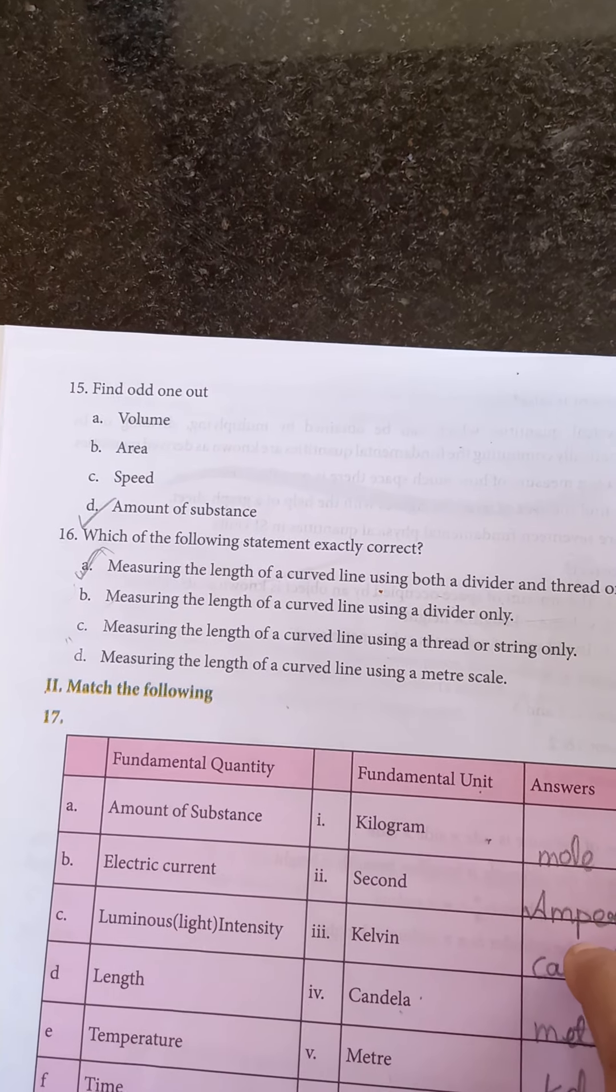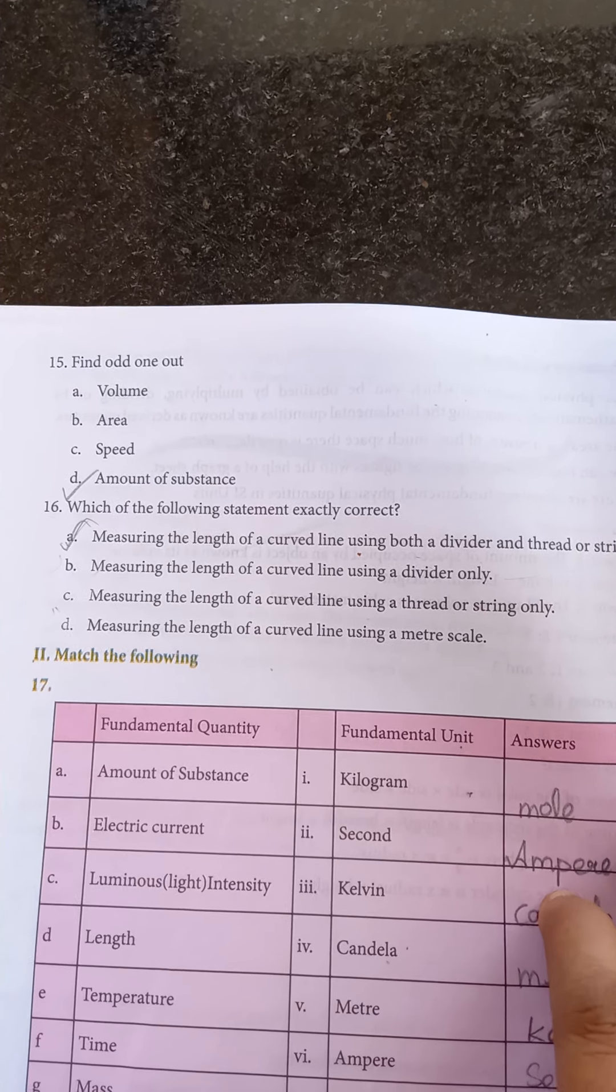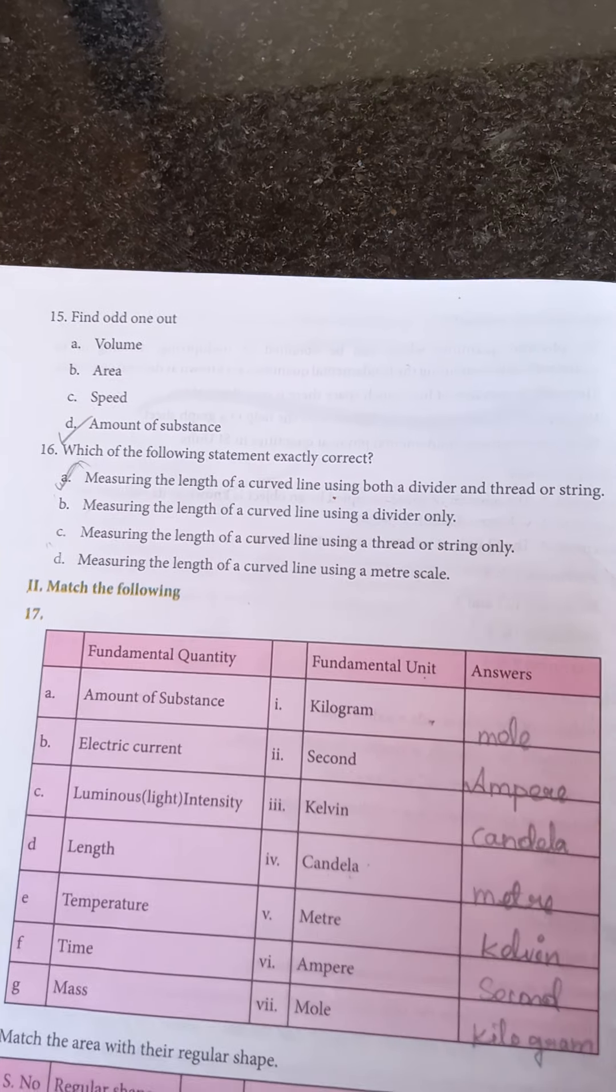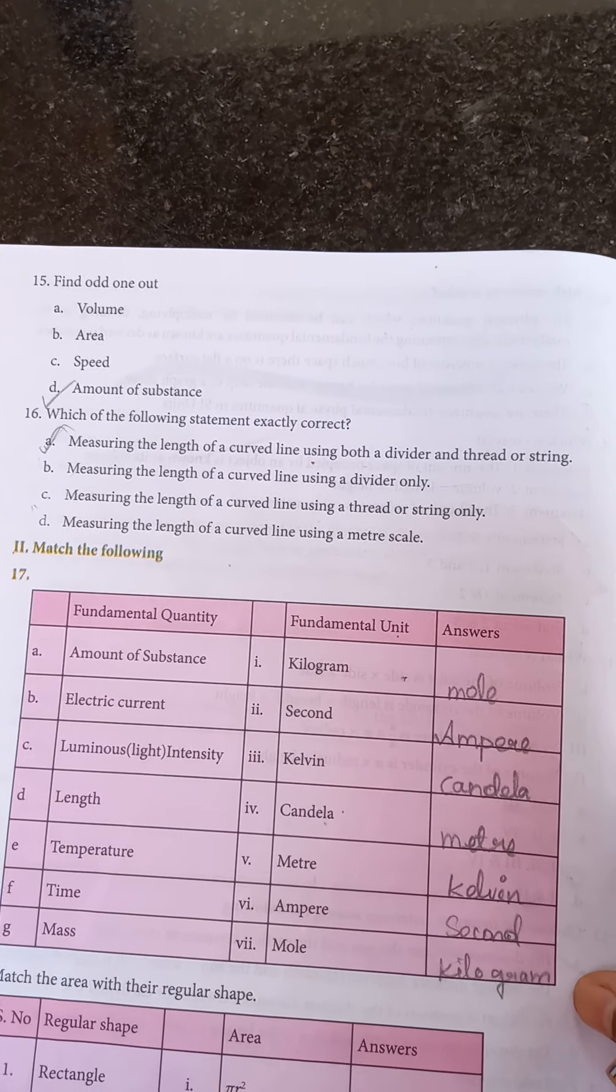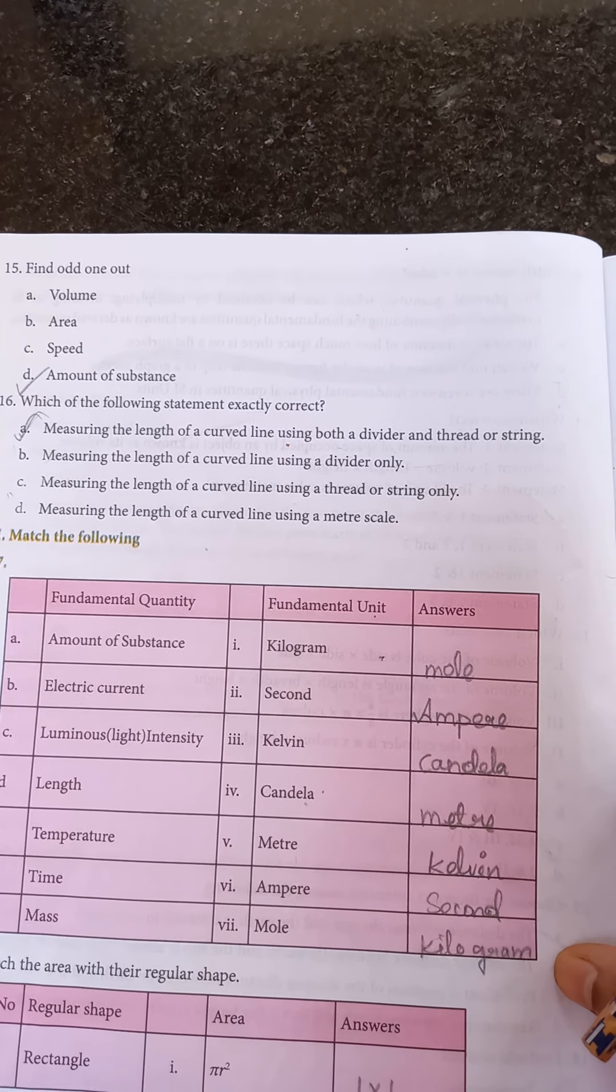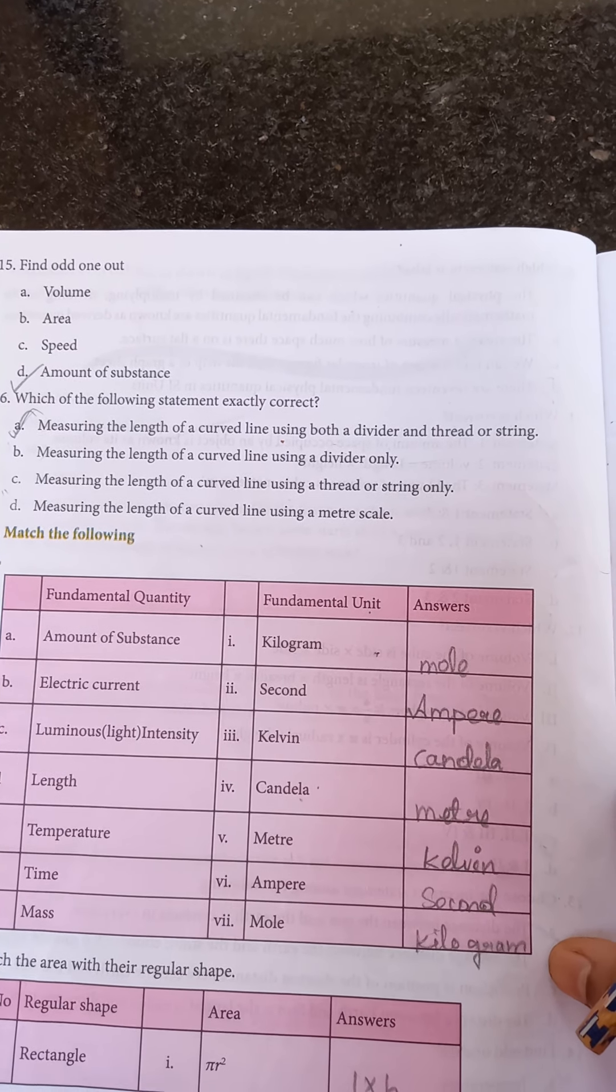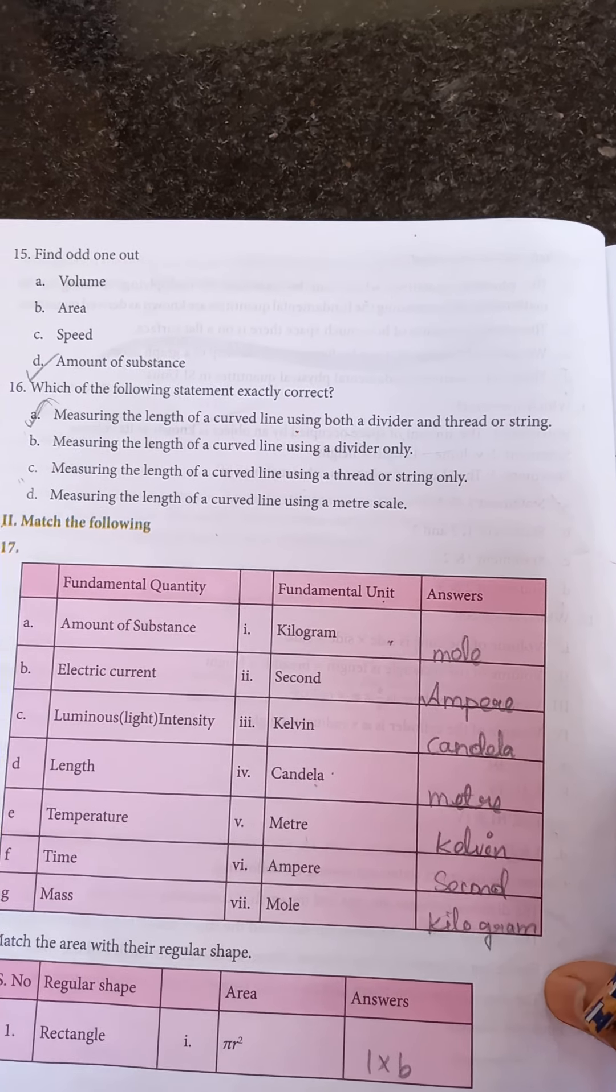15th question: find odd one out. Option D is the answer, amount of substance. Which of the following statement is exactly correct? The first statement, option A, is correct: measuring the length of a curved line using both the divider and the thread or string. This is exactly correct.